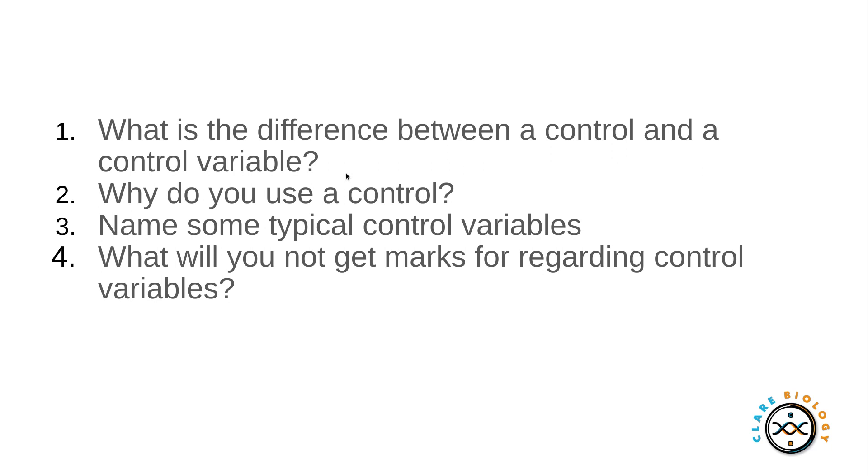Some typical control variables include things like the same species, the same age, the same surface area, the same concentration or temperatures or volumes, all the same volumes.